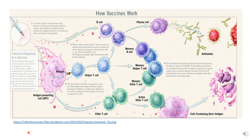A vaccine is a killed or weakened version of an infectious agent that cannot cause disease by itself but is able to stimulate the immune response. Typically, a vaccine is injected into the arm of an individual and it's able to activate various immune cells.